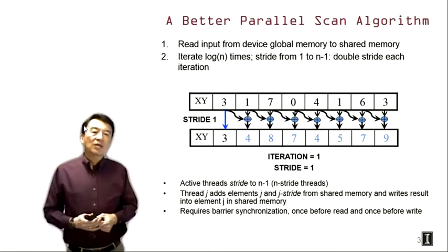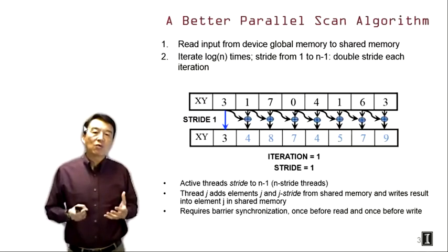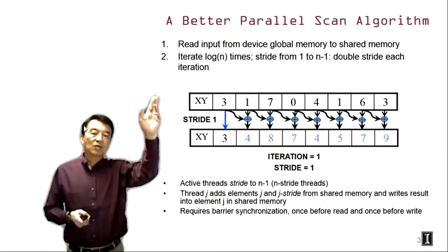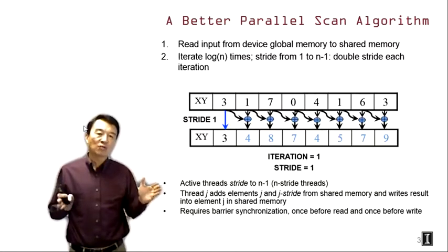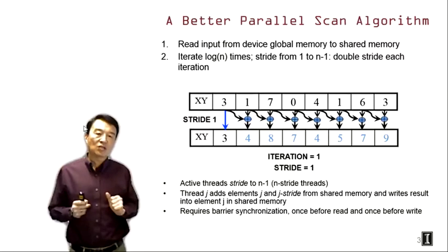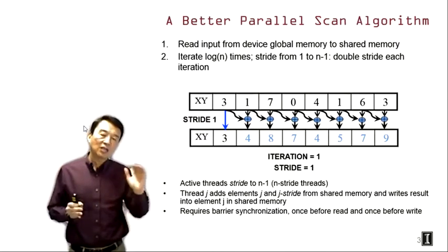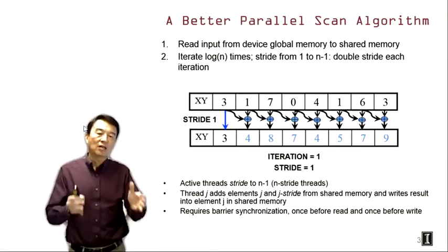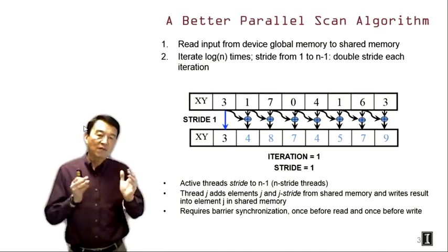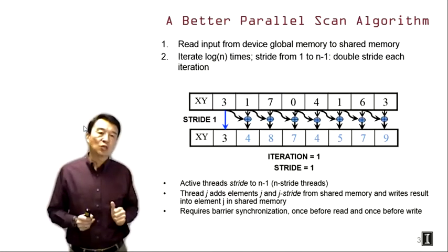Here is the design of the kernel that we'll be going through today. We assume that every thread block is going to be processing one segment of a larger vector, and the original vector is going to be in device global memory. All the threads, just like in all the previous examples, will collaborate and load the elements of the section into the shared memory.